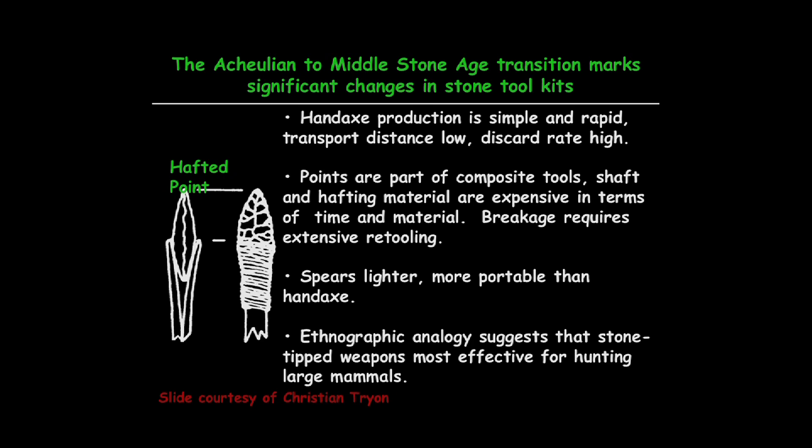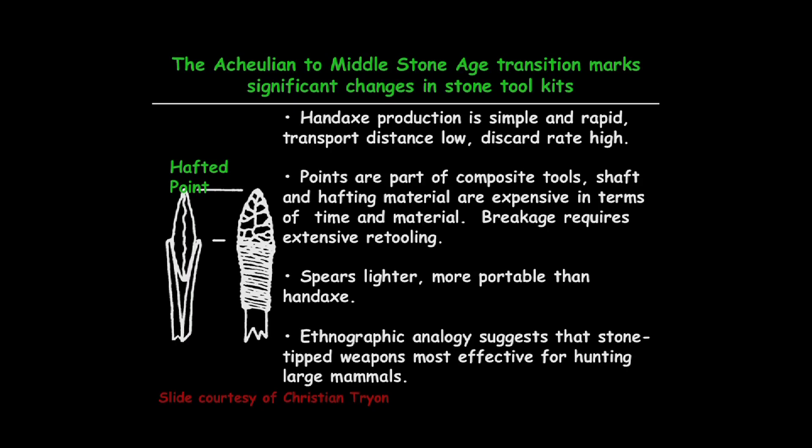The transition from the Acheulean to the Middle Stone Age involves significant changes in stone toolkits. Eventually, they give up the hand axes and start producing points. These are parts of composite tools — you need to make a hafting material and system, which could involve binding or glue. It takes a long time to make a haft that you tie them to; you can't just take any old stick, or it won't fly straight. Spears are lighter and more portable than hand axes, and ethnographic analogies suggest stone-tipped weapons are particularly effective for large mammals.